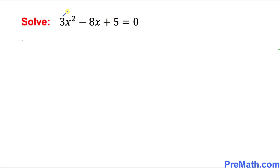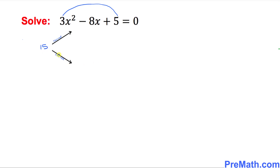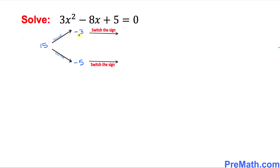We are going to create a rainbow by simply multiplying these two end numbers. 3 times 5 is going to give us positive 15. Now we are going to factor 15 into two numbers so that if you add them, you get negative 8.